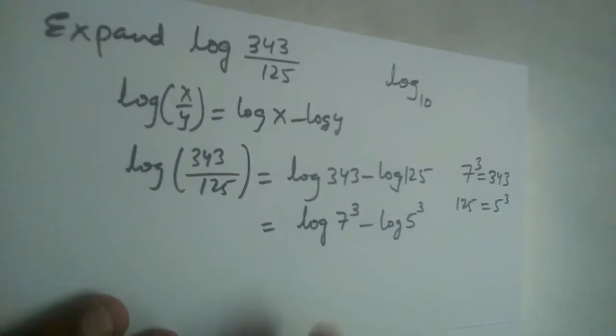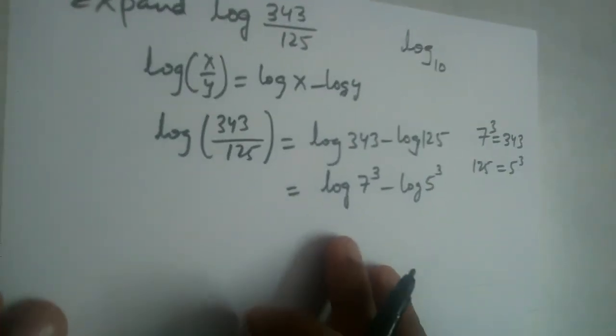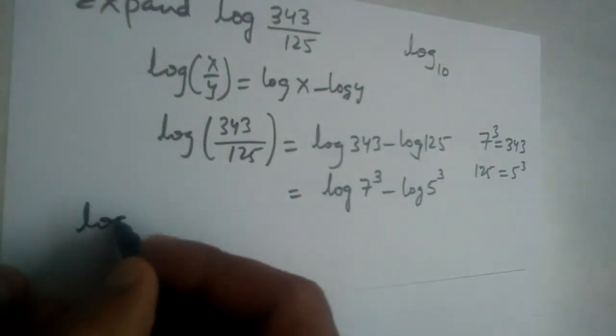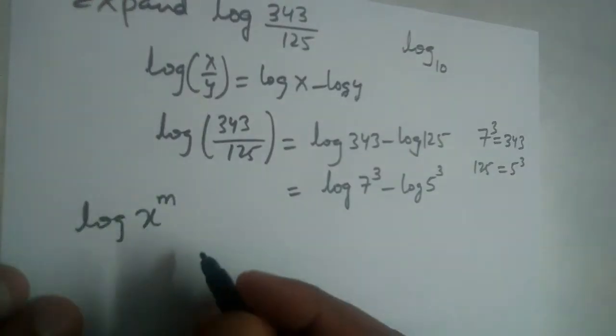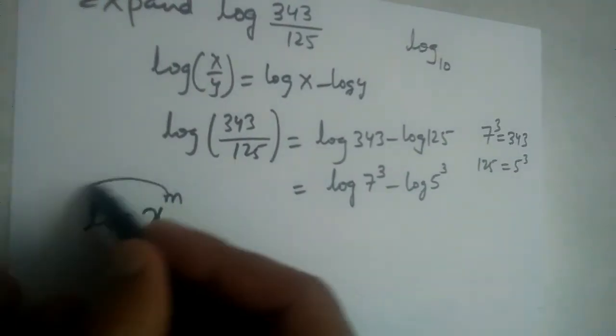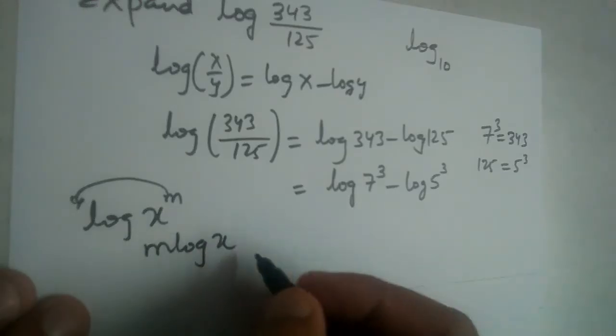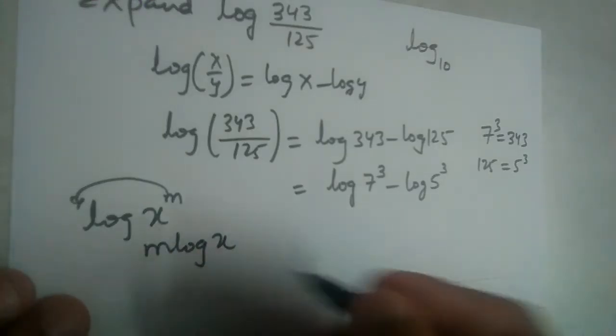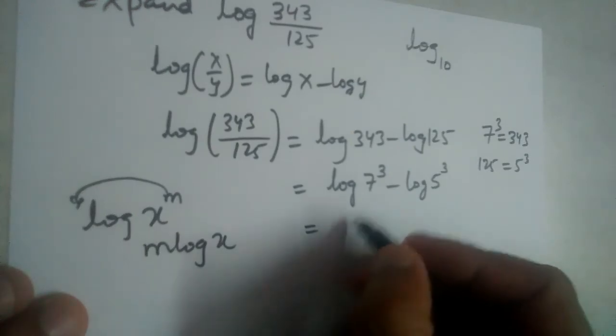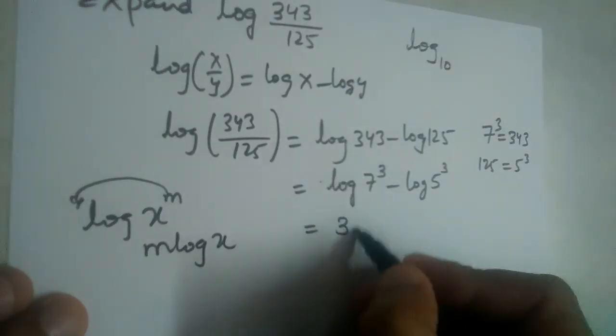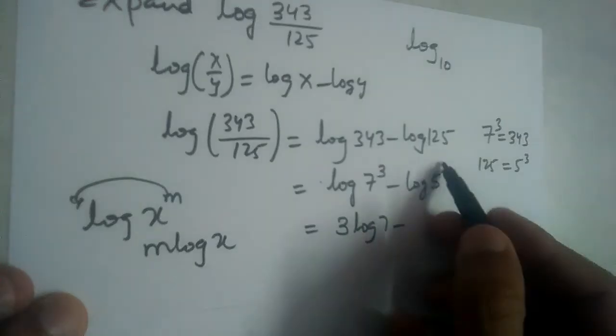We also know the formula: log x^m equals m log x. The power comes to the front of the log. So this becomes 3 log 7 minus 3 log 5, where both exponents of 3 come to the front.